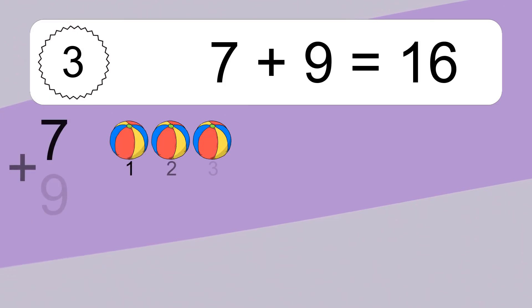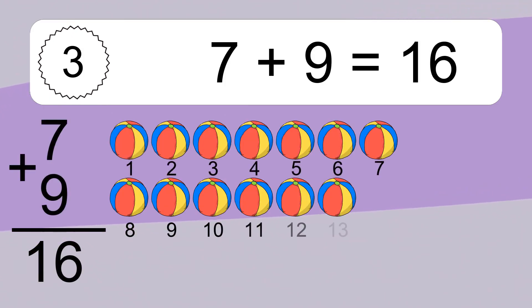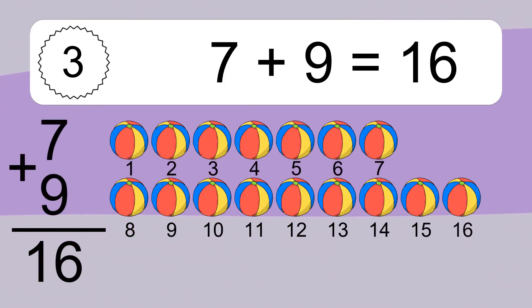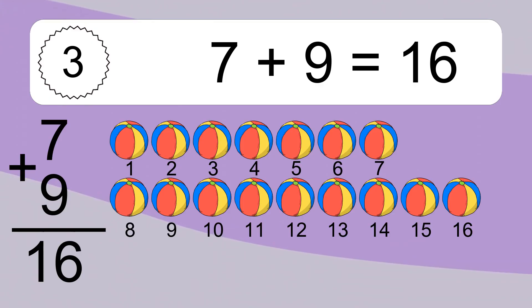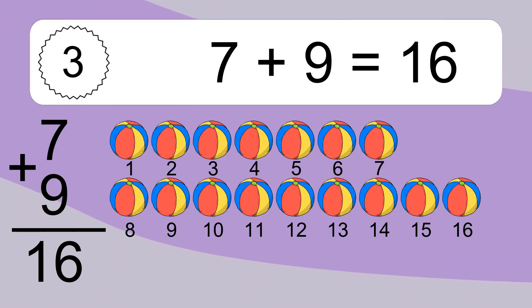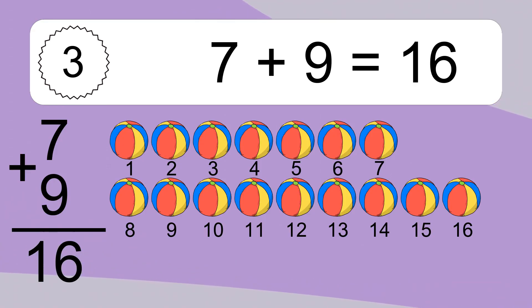7 plus 9 equals what? 7 plus 9 equals 16. Let's count it! 1, 2, 3, 4, 5, 6, 7, 8, 9, 10, 11, 12, 13, 14, 15, 16.